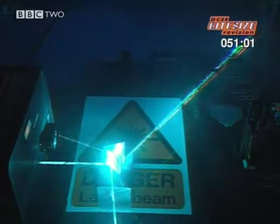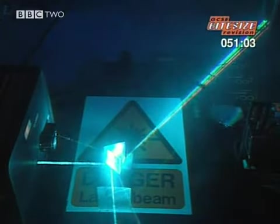Light is also refracted. That is slowed down and bent when it passes through a different medium like this glass block.